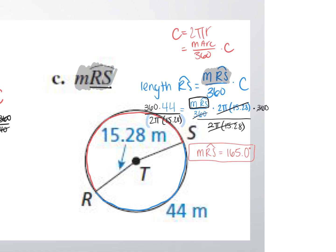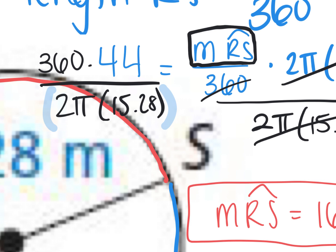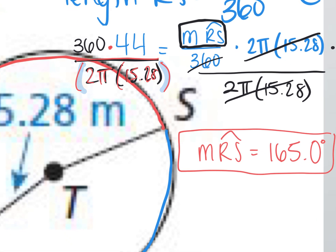Sophia, you should have plugged in 360 times 44 divided by — make sure you have parentheses — around 2π times 15.28. Did you get 165? Yay. 164.98 — perfect. We're going to take our time with this lesson, guys. It's very important. We're Gucci? All right, moving on.